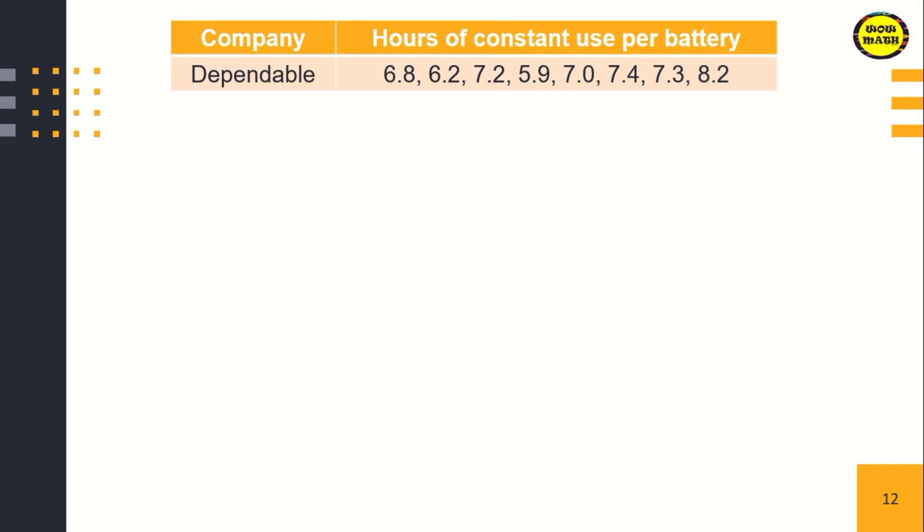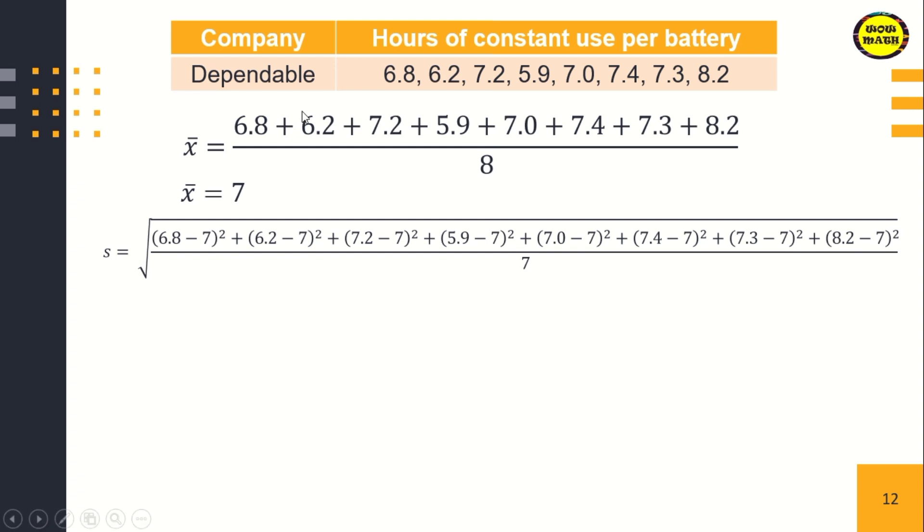Next, for the second company, Dependable. Same process. Add to get the average or mean value, divide by 8, so the mean is 7, same as the first company. Then substitute into the formula. So (6.8-7)² up to (8.2-7)² divided by 7. Using your calculator, that's 3.62 over 7, then square root, which is 0.72 hours. So for the second company, we get 0.72 hours.